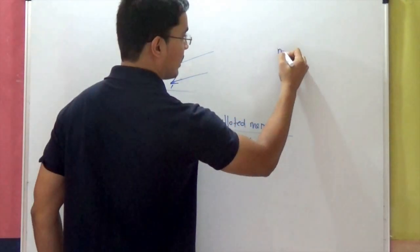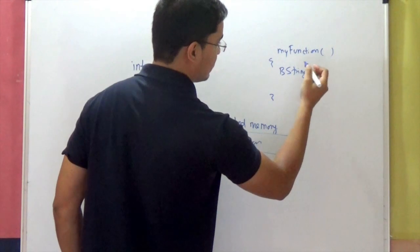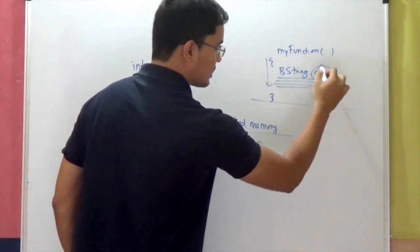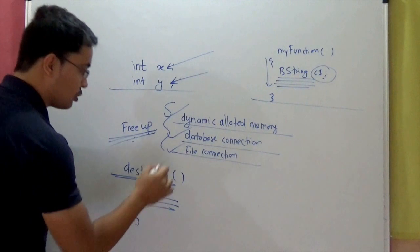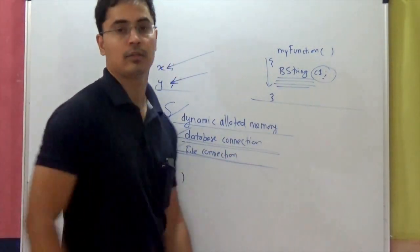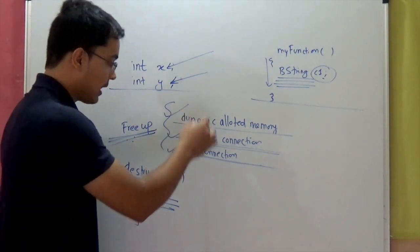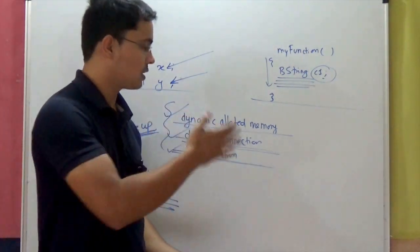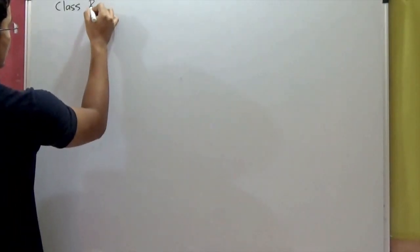Before your object goes out of scope — suppose this is your function, let's say myFunction, and here you are creating your object of bString class, c1 — when this function concludes, this c1 object will go out of scope, and automatically the destructor will be called. You should write code here to deallocate the dynamically allocated memory or to close any open database or file connections. So let's implement this concept now. We will simulate the string data type behavior, and I'm going to write a class called bString.